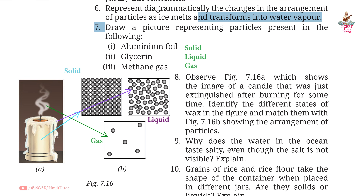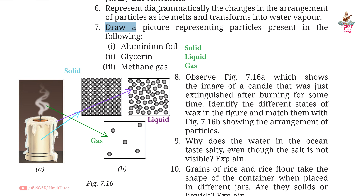Question 7: Draw particles present in the following. First: Aluminium foil — solid. Second: Glycerine — liquid. Third: Methane gas — gas. You can draw these particle arrangements for solid, liquid, and gas as shown.